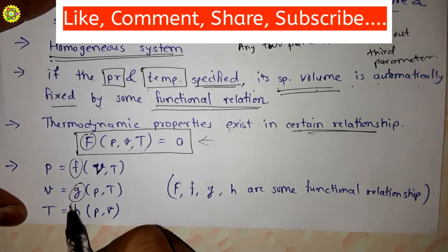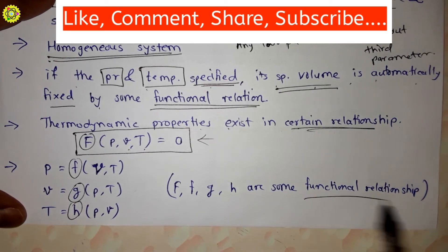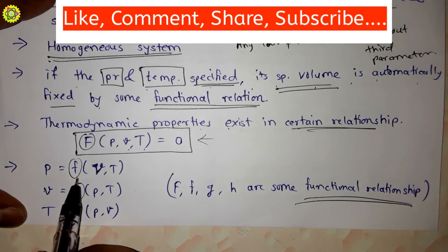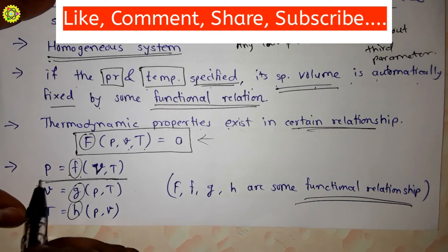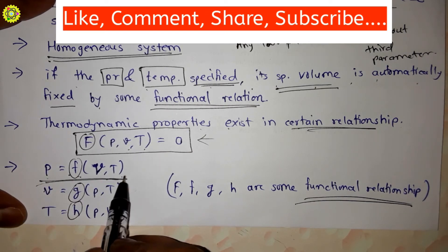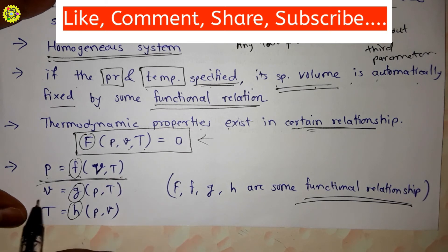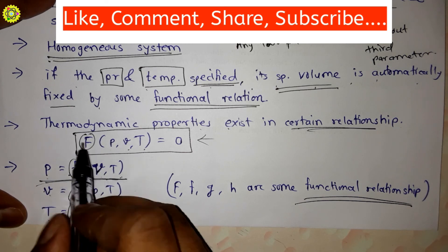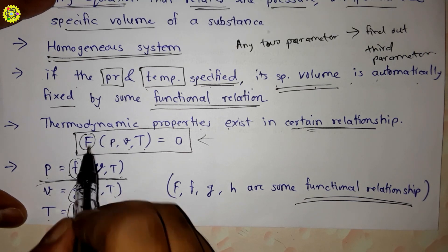We can read this equation as: p is a function of v and T, meaning p = f(v,T). Similarly, v is a function of p and T, so v = g(p,T). And T is a function of p and v, so T = h(p,v). These f, g, and h are all functional relationships.